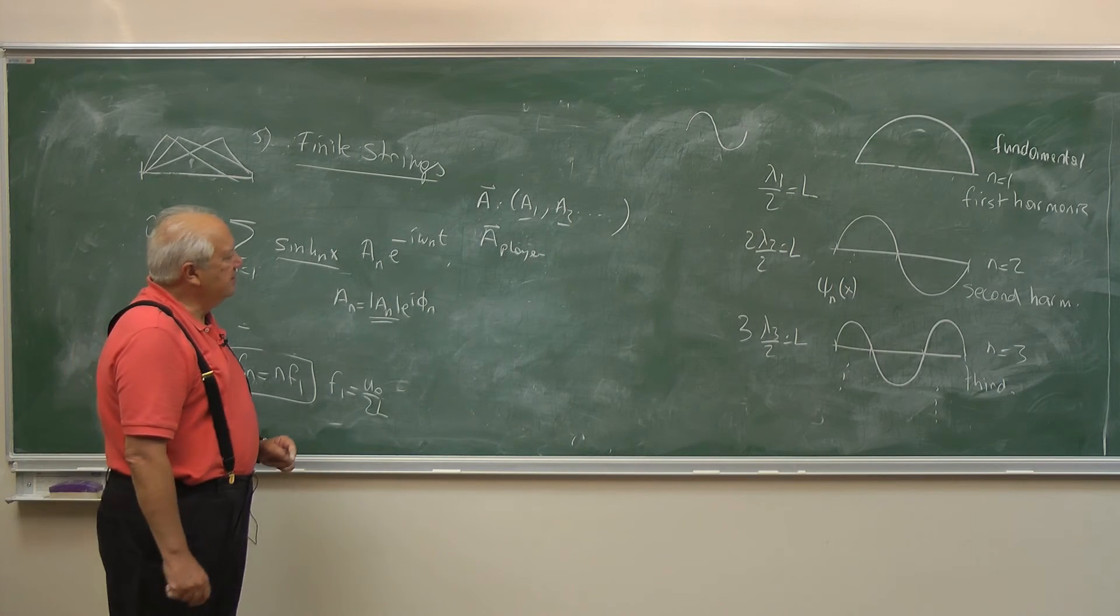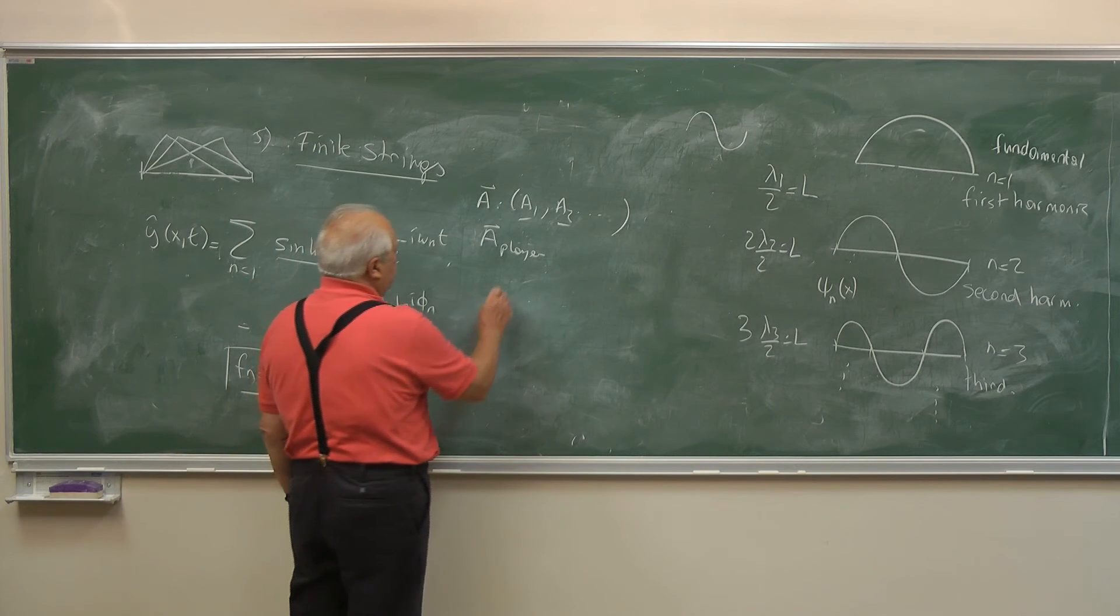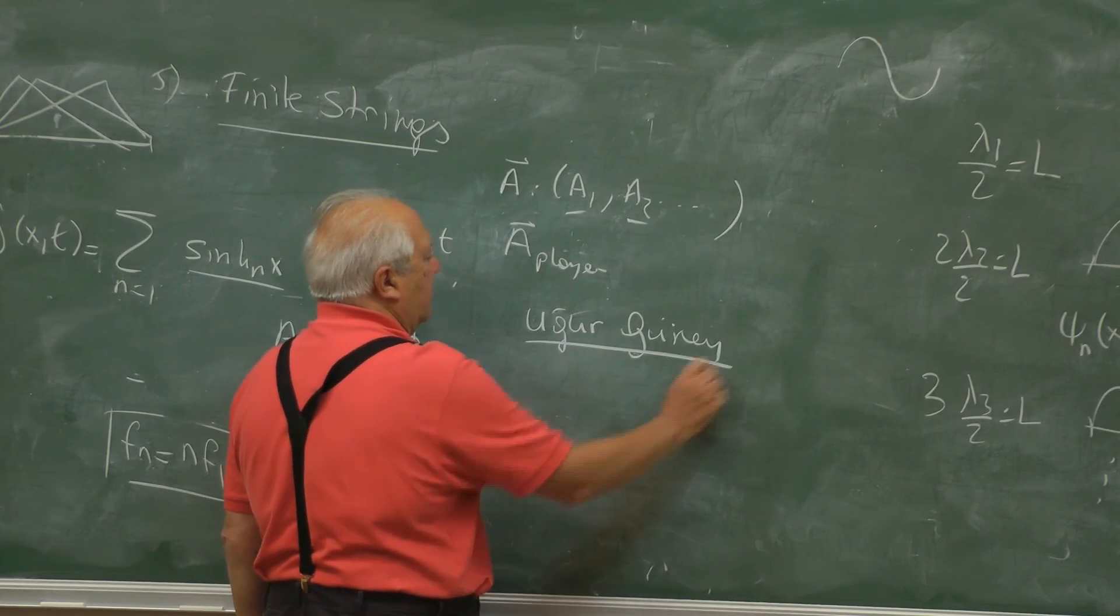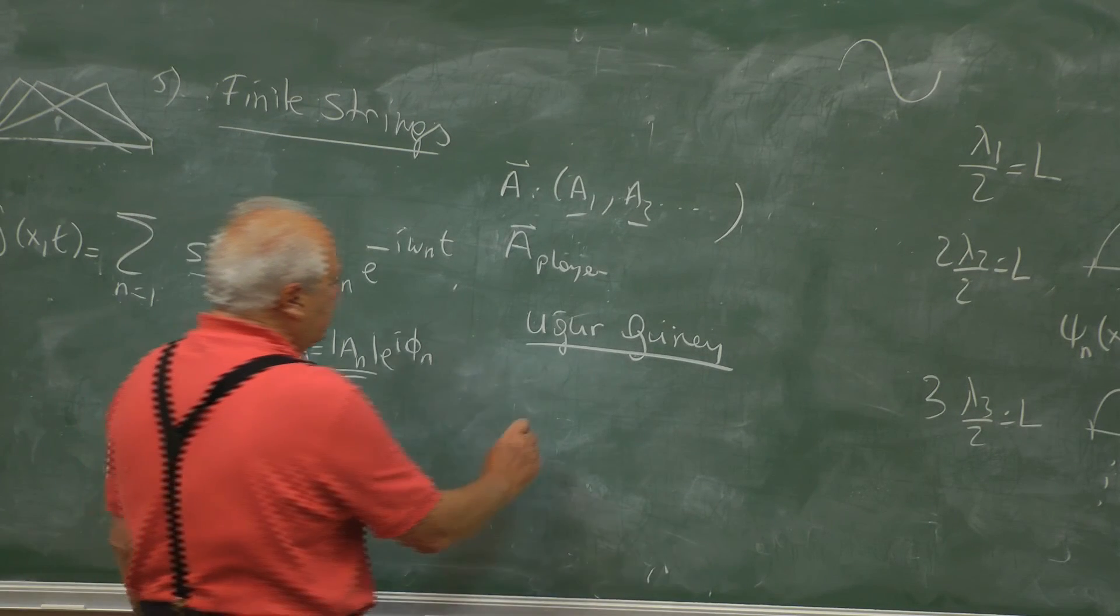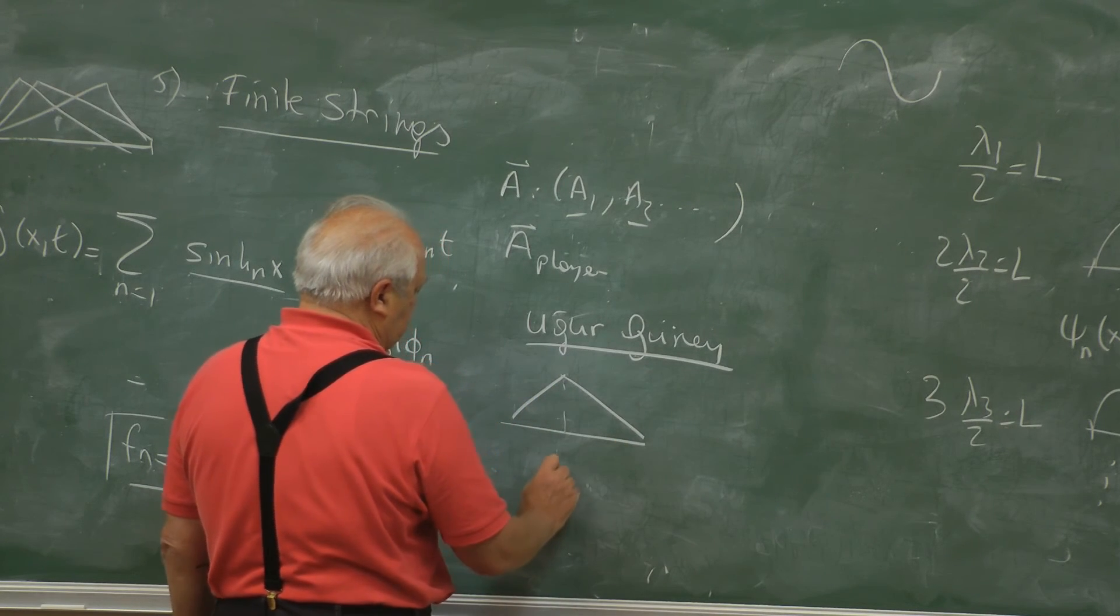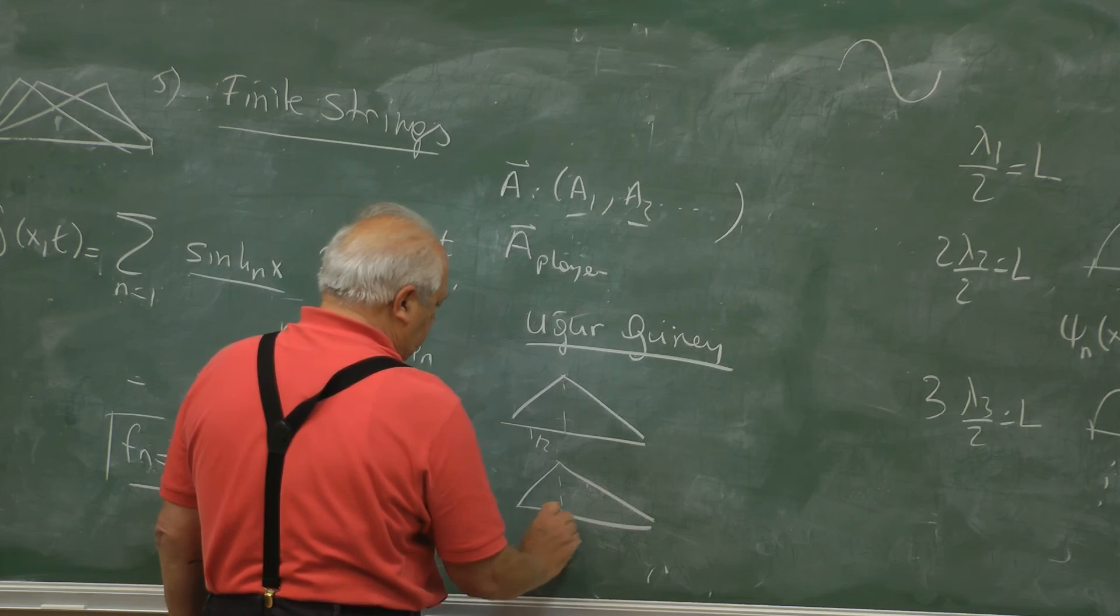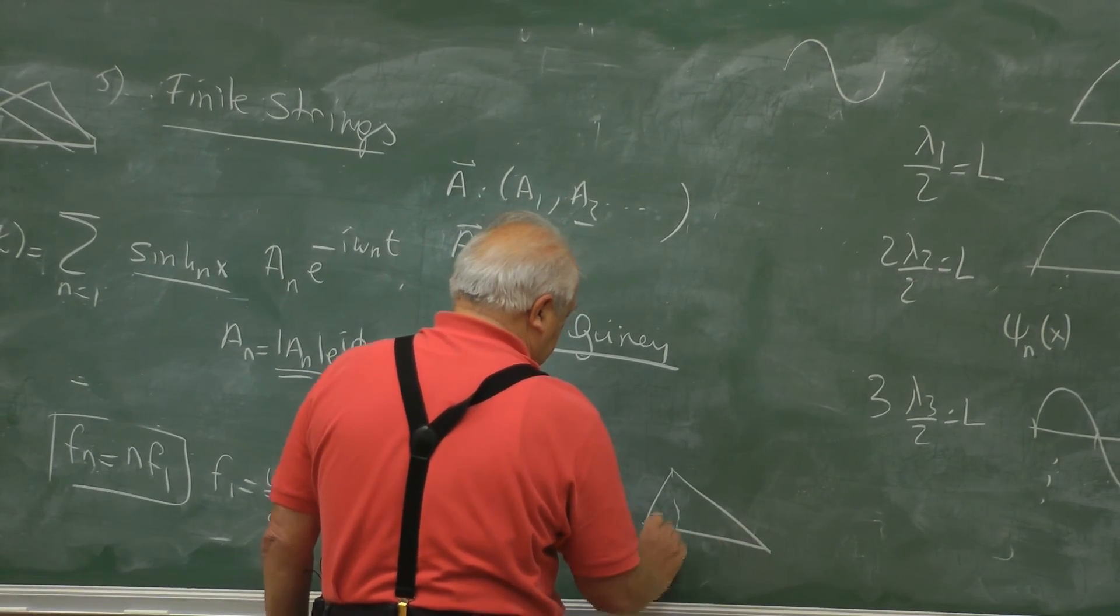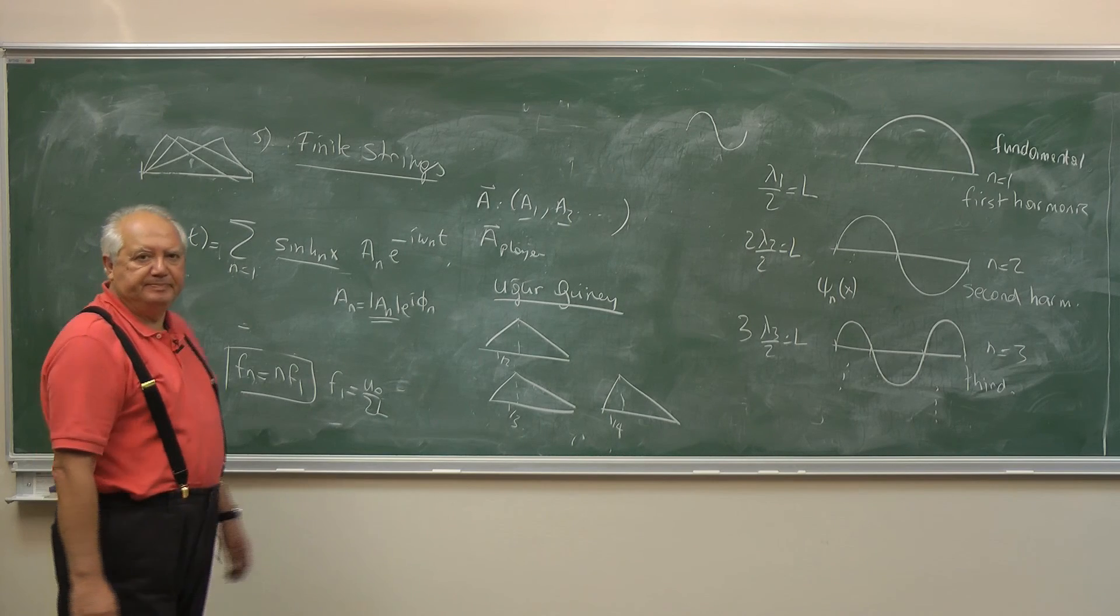Now at the end of this discussion, you will see three videos prepared by Uğur Güney. It is the exact solution of the wave equation, numerical. In one case, the string is plucked from the center, and one third away. So one half, one third, and one fourth. So you can see how they are oscillating. Thank you.